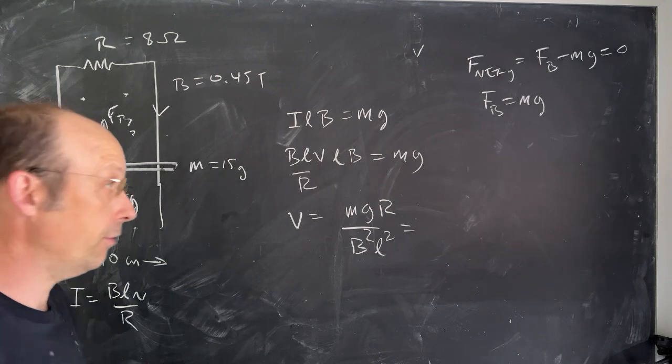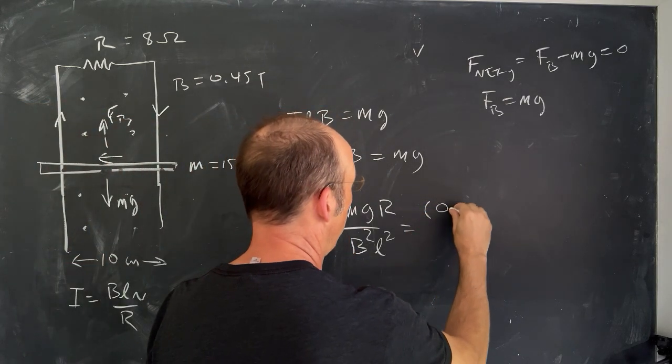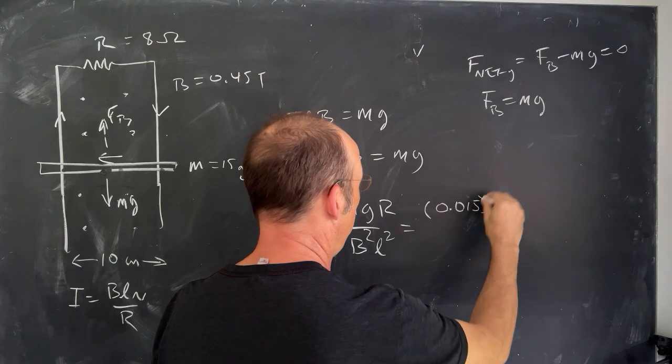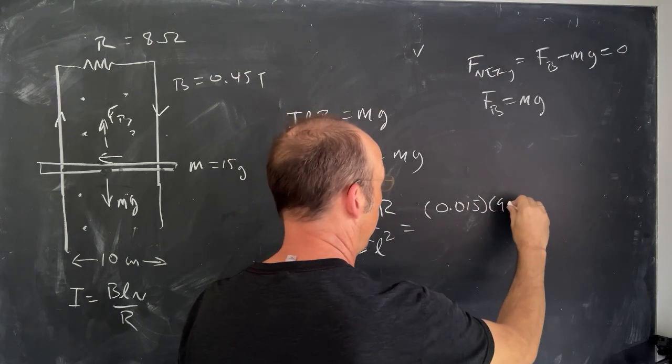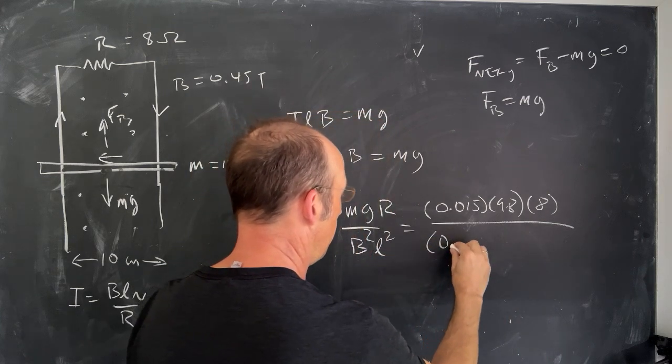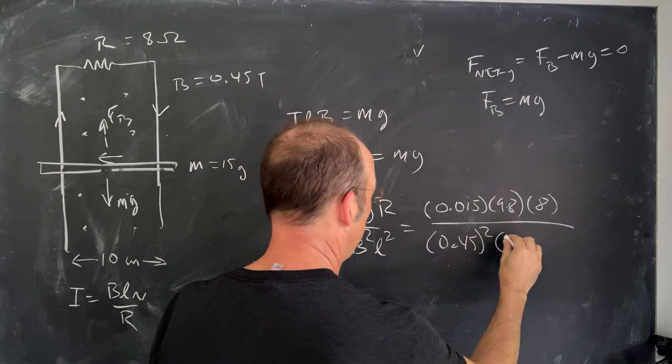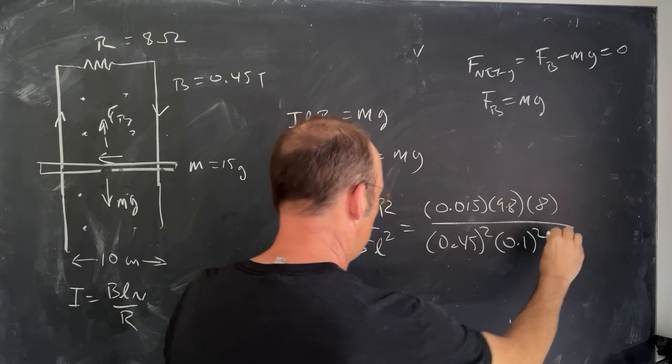So let's go ahead and put in our values. The mass was 15 grams, so that's 0.015 kilograms. G is 9.8. R was 8 ohms. B is 0.45 squared. The length is 10 centimeters, so 0.1 squared.